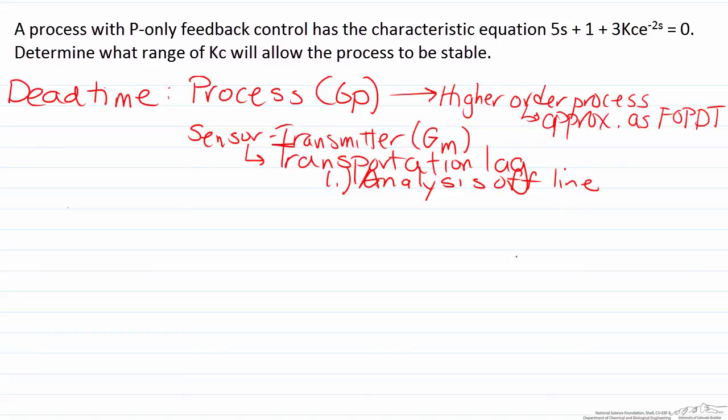The first case is the fact that your analysis is being done offline to measure your variable of interest, so for example if you are using a gas chromatograph in order to measure a composition of some sort, or some other analytical tool, it most likely is not necessarily in line.